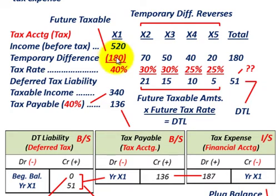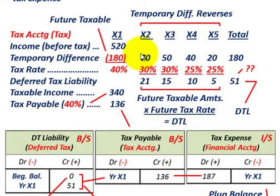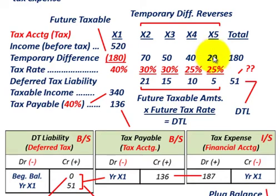Let's say it's an expense item that we can deduct in year X1, but when we project it out into the next four years — year X2 through year X5 — we're not going to be able to deduct any of that expense since we've taken the total amount in year X1. What this sets up is a future taxable amount of $180,000. This temporary difference is going to reverse itself: for year X2 it's $70,000, year X3 $50,000, year X4 $40,000, and year X5 $20,000. That's going to increase our income by reversing this temporary difference.